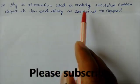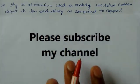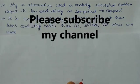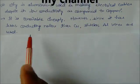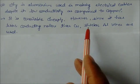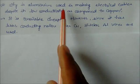Why is aluminum used in making electrical cables despite its low conductivity compared to copper? It is available cheaply. However, since it has lower conductivity than copper, thicker aluminum wires are used.